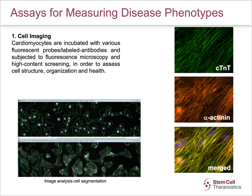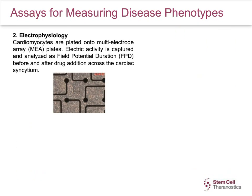The lower panel shows how we conduct image analysis on a high-throughput platform using cell segmentation programs. Electrophysiology is another assay for measuring phenotypes. In this assay, cardiomyocytes are plated onto multi-electrode array, or MEA plates. Electric activity is captured and analyzed as field potential duration, FPD, before and after drug addition across the cardiac syncytium.